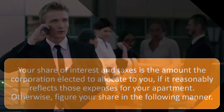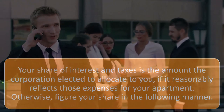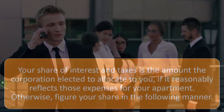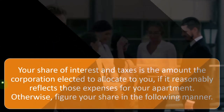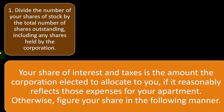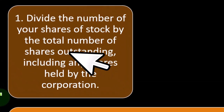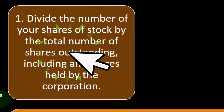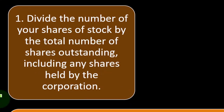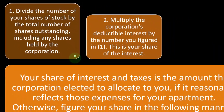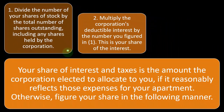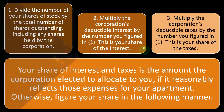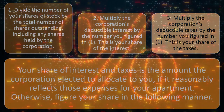The question is: how do you figure out your portion? Maybe the cooperative itself will do that with some reasonable method. If they do not, then you calculate it. First, divide the number of your shares of stock by the total number of shares outstanding, including any shares held by the corporation — that gives you your percent interest. Then multiply the corporation's deductible interest by that number. This is your share of the interest — a fairly straightforward calculation.